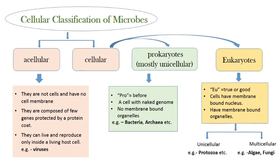If we consider the cell structure of microbes, they are mainly classified into two groups: one is acellular, and another one is cellular microbes. Acellular means they don't have a particular cell structure — they don't have a cell membrane-bound structure. They have only a genomic material protected by a protein coat, and they can live and reproduce only inside a host cell. Example: viruses.